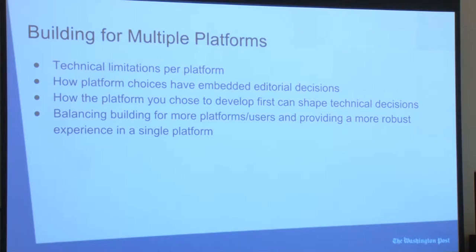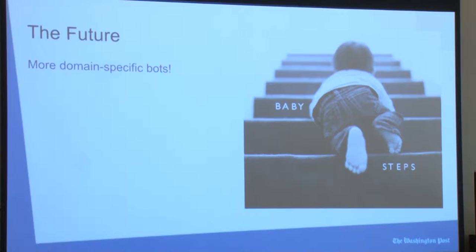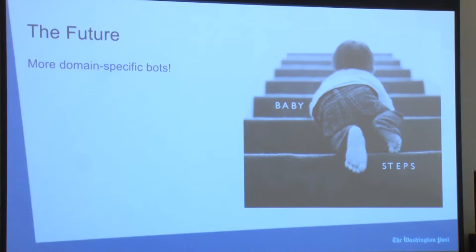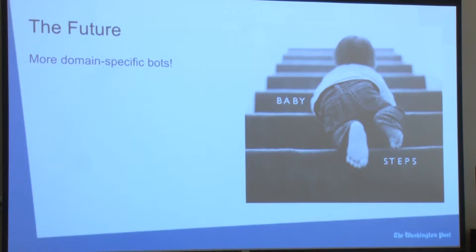There must be a balance between building for multiple platforms versus making a great experience on one. Heliograph's infrastructure is the result of the ongoing maturation of conversational bot technology in our newsroom. Domain-specific bots provide value to readers and newsrooms by allowing coverage of vast amounts of information that may otherwise not get coverage, delivering relevant, timely, and personalized news to the reader. As automated journalism matures, we expect many more newsrooms will go from their first experimental bots to making automated journalism a regular part of their storytelling tool belt.